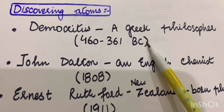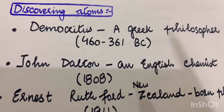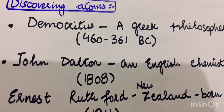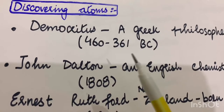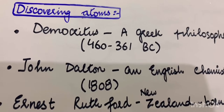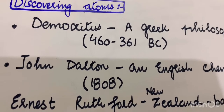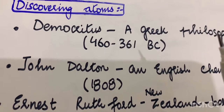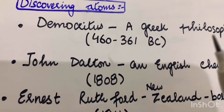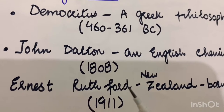For the discovery of atoms, number one is Democritus, a Greek philosopher from 460 to 361 BC. He was the first to put forward the idea of atoms. He ground up different materials until he had a fine powder which could not be broken down into anything smaller. The word 'atom' comes from the ancient Greek word meaning 'invisible' or indivisible.